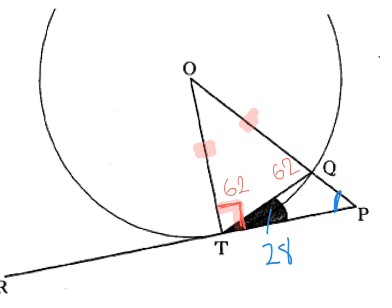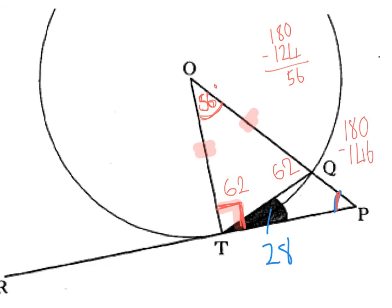Now we have two options. I want to get the one at the top because that's what most people will do. 62 doubled is 124, and 180 take away 124 is 56. So we've got 56 at the top. Using just the 56 and the 90, I've got enough information to get the angle at P. 180 take away 146 — combining the 90 and the 56 — makes the missing angle 34. So angle QPT equals 34 degrees.